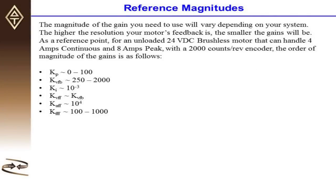As a reference point, for an unloaded 24 volt DC brushless motor that can handle 4 amps continuous and 8 amps peak, the order of magnitude of the gains is as follows. KP is roughly between 0 and 100.